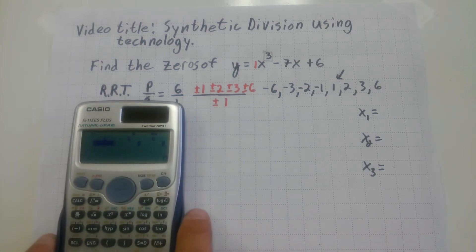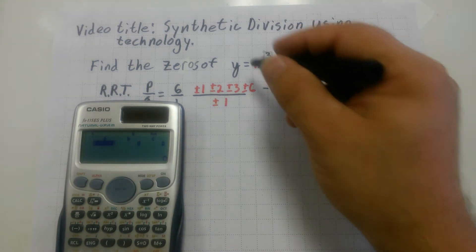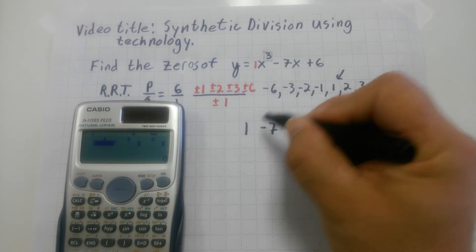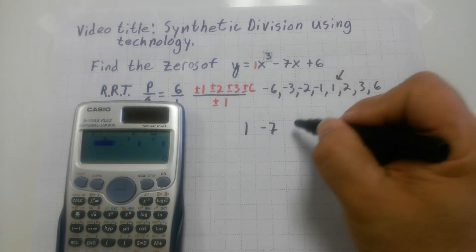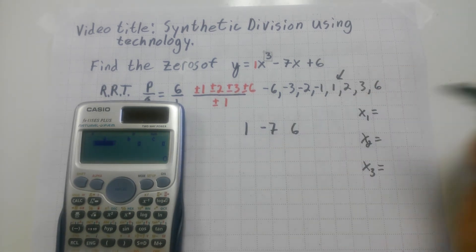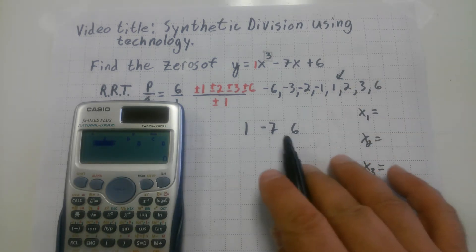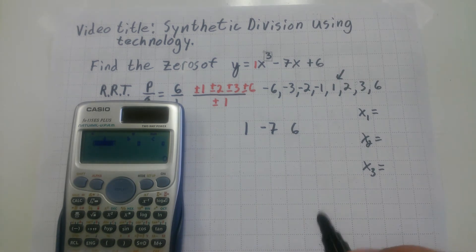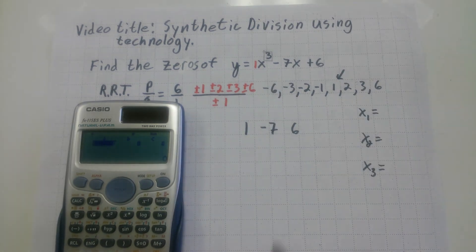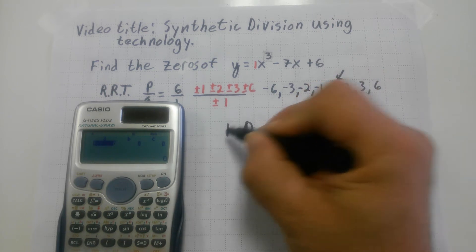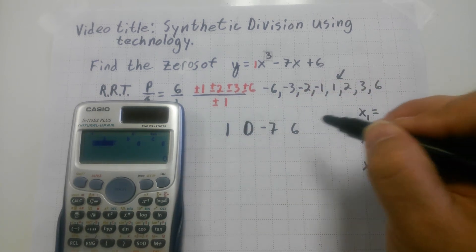And now, just like synthetic, in synthetic, don't I write down the leading coefficients, which are one, negative seven, and six. Now, I'm feeling a little nervous here. There doesn't seem to be enough information, and I see it. There's actually a zero X squared. So I should have a one, a zero, a negative seven, and a six.